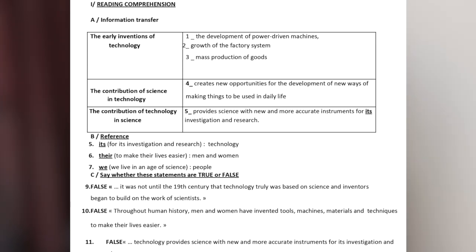We have a true or false — all these statements are false. Justify with relevant passages from the text. Number nine: the close collaboration between science and technology effectively began in the 16th century. Number ten: humankind has never searched ways to improve their lives. Number eleven: the progress of technology has no impact on scientific activities. These sentences are false, so justify them by quoting from the text.